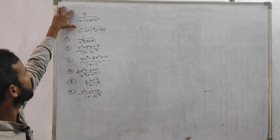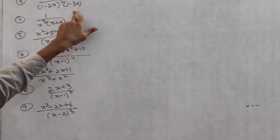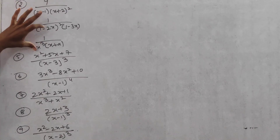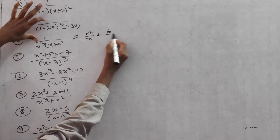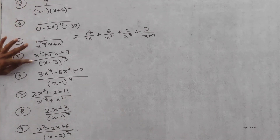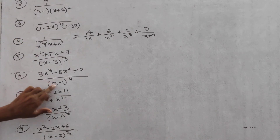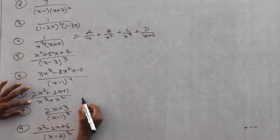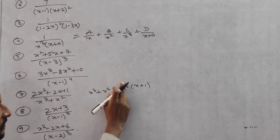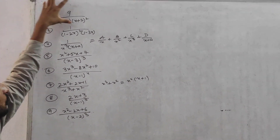Try similar problems: one with a non-repeated and one repeated linear factor. For a denominator like x³ + x² = x²(x+1), take A/x + B/x² + C/(x+1). For a factor like (x-1)⁴, you get 4 partial fractions. For repeated factors like (x-3)³, take A/(x-3) + B/(x-3)² + C/(x-3)³. These are the related problems in Method 2.